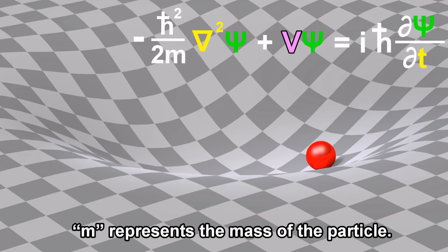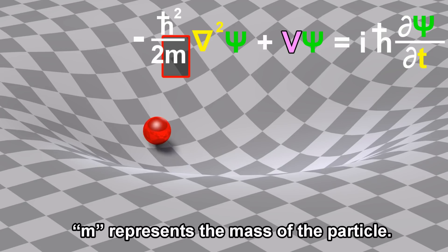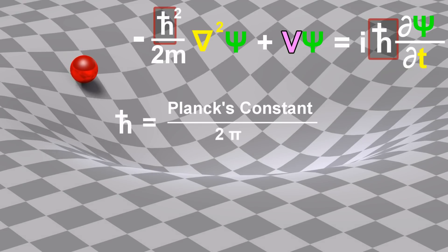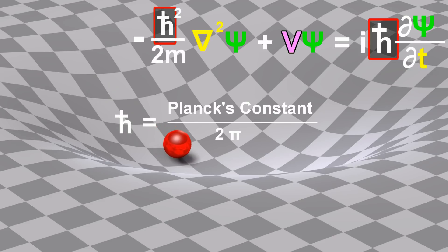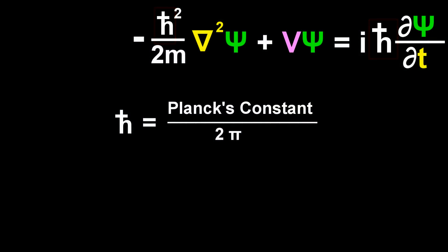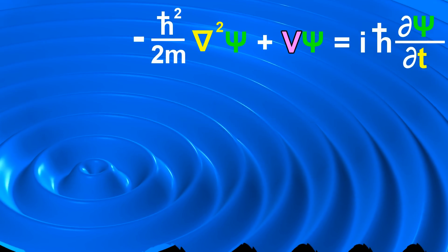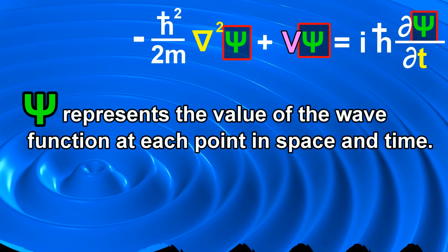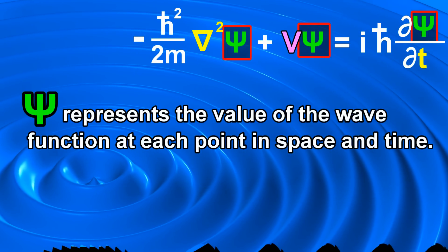M represents the mass of the particle. H-bar represents Planck's constant divided by 2 pi. This variable represents the value of the wave function at each point in space and time.